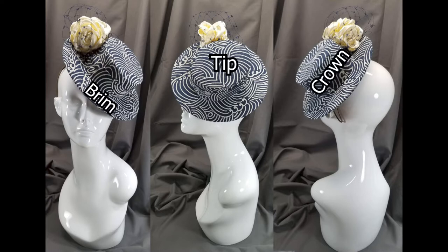The boater parts are the brim which extends from the base of the crown, the tip which is the very top of the hat, and the crown which connects the tip and the brim to each other. When the tip and the crown are joined we call this connected part of the hat the crown.